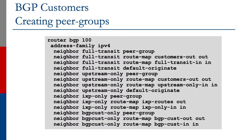This slide shows how we would create the peer groups mentioned earlier. We have a BGP router in AS100, so you have router BGP 100. You have a neighbor full-transit as a peer group, defined as a peer group, with a route map called customers-out for what we advertise to this peer group, and full-transit-in as a route map for the inbound. For full transit customers, we also originate a default route.